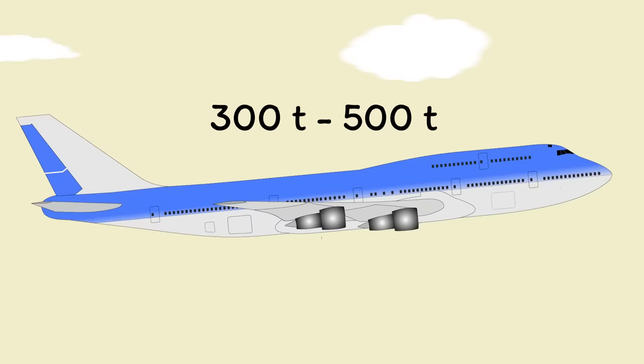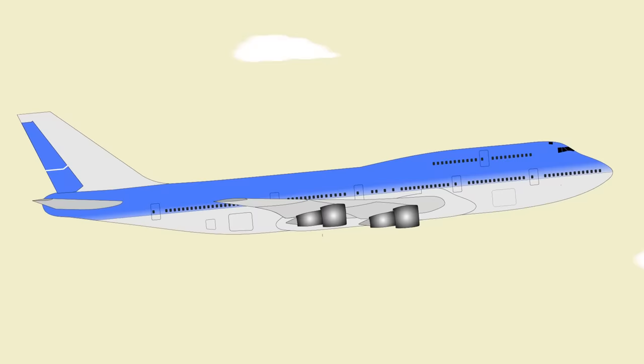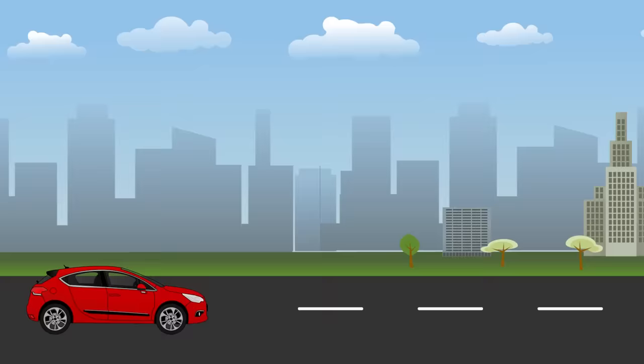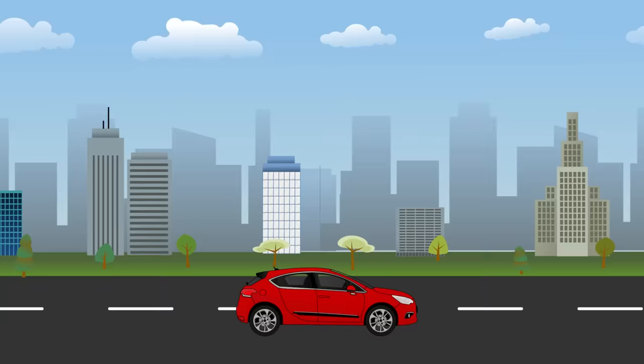For the plane, we can take the 747. They come in anywhere between 300 and 500 tonnes and are powered by four of those jet engines. A crude effort gives the power per tonne at around 1,200 horsepower per tonne. The car was around 100 horsepower typically, and you can assume a normal car weighs between one and two tonnes, averaging that out gives you about 75 horsepower per tonne.